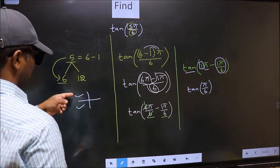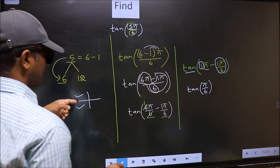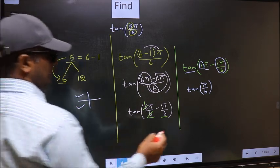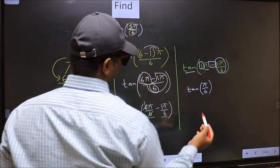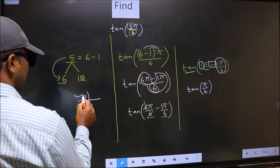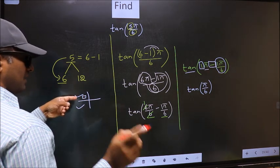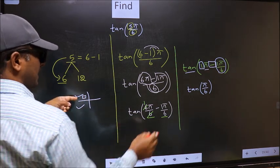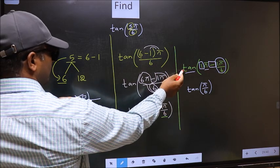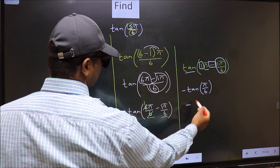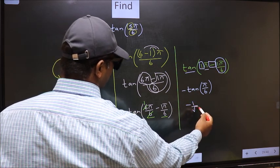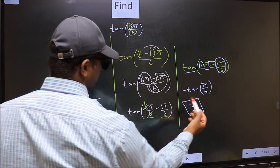So now, to select the quadrant, we should look at this symbol. Here we have negative, that means the angle lies in the second quadrant. And in the second quadrant, tan is negative, so we should put negative. So negative tan(π/6) is -1/√3. This is our answer.